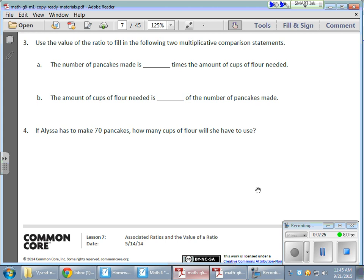The number of pancakes made is what times the amount of cups of flour needed. Well, if it's a 1 to 5 ratio, the value of the ratio is 1 to 5 pancakes to cups of flour. The number of pancakes made is going to be 5 times the number of cups of flour needed, or 5 to 1. So for every 5 pancakes, I'm going to need 1 cup of flour. And for letter B, the opposite is true. The amount of cups of flour needed is actually one-fifth then, or one-fifth of the number of pancakes made.